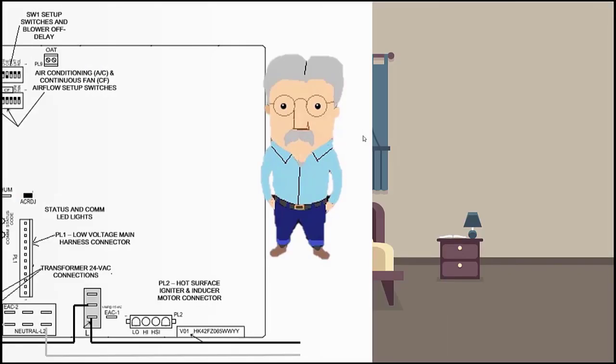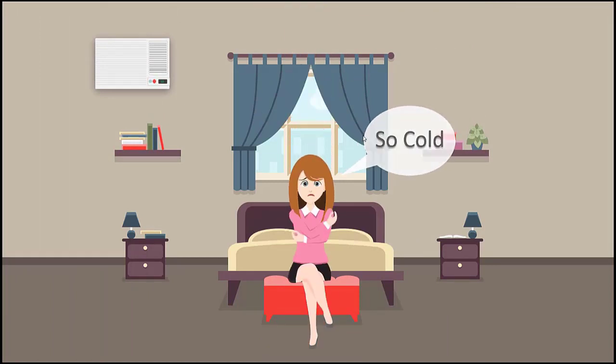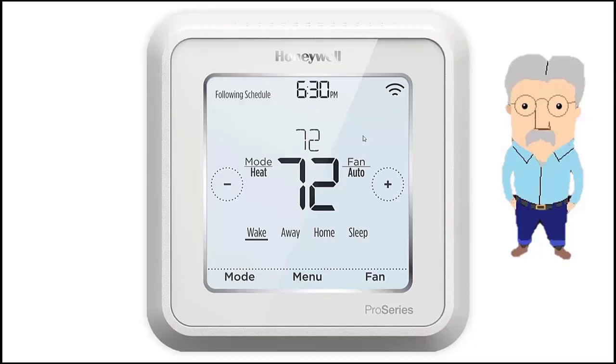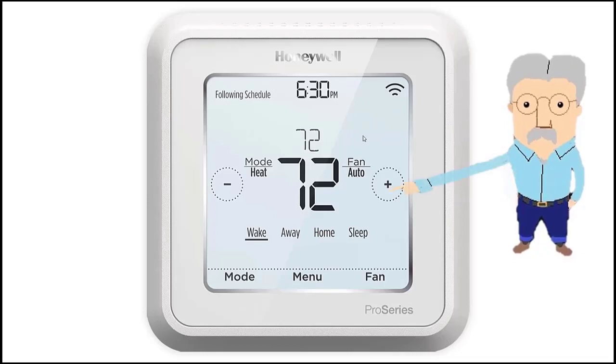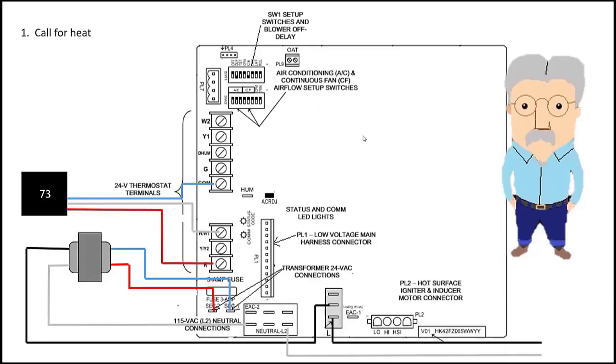The first in our sequence is a call for heat. What can we do to help this young lady? So let's walk over here to our thermostat and adjust the heat up. There we go. We got it up to 73 degrees. And let's go back to our board now. So we have a call for heat. Let's run a wire from thermostat to W1. When W1 is called, that is a call for heat. And that starts the entire sequence.